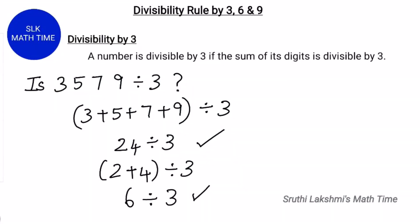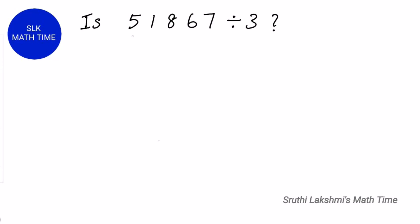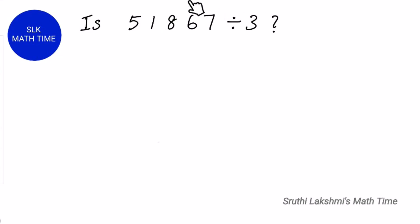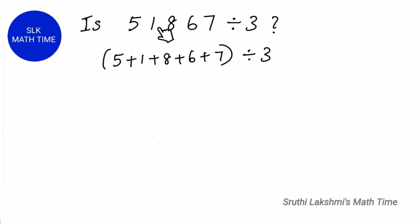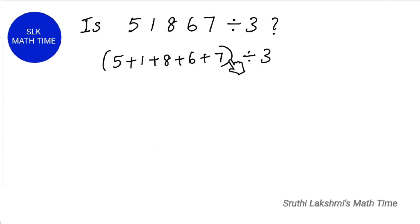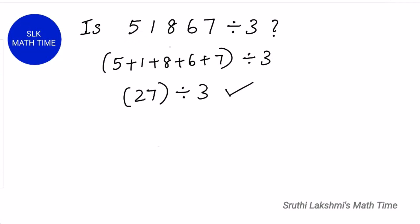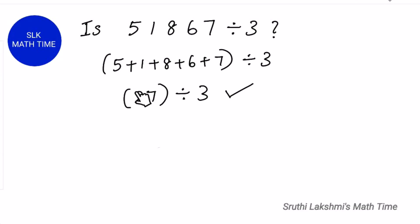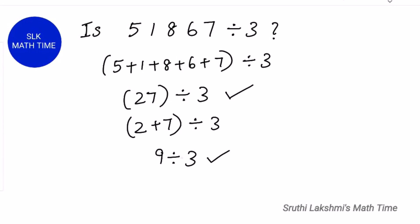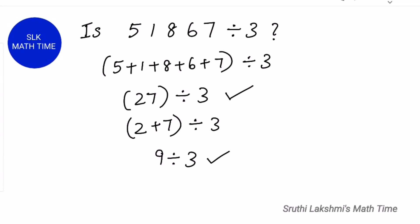Isn't that so easy? Is 51867 divisible by 3? First, let's add all the digits. So 5 plus 1 plus 8 plus 6 plus 7. When we add this all together, we get 27, and 27 is divisible by 3. So 51867 is also divisible by 3. And let's add the digits of 27: so 2 plus 7 is 9, and 9 is also divisible by 3.